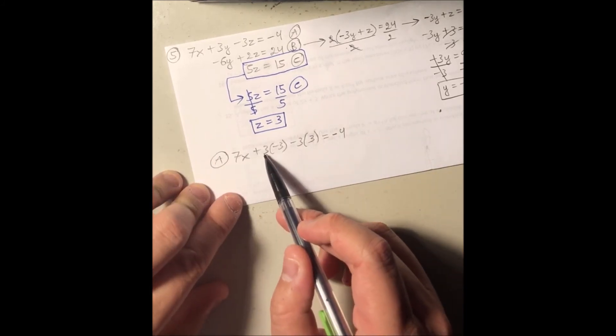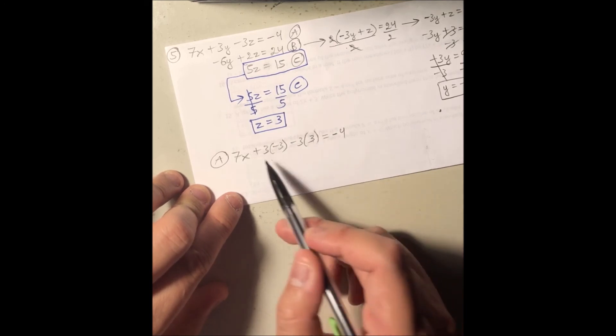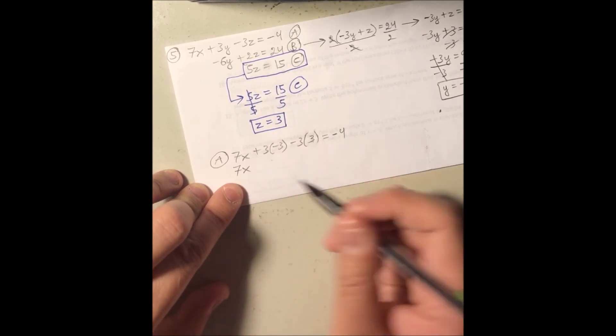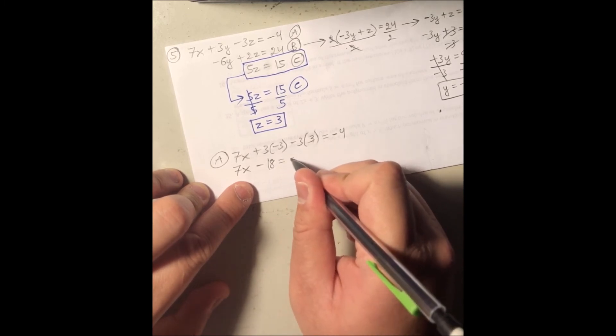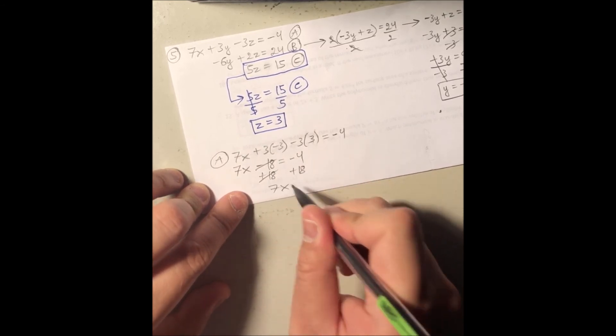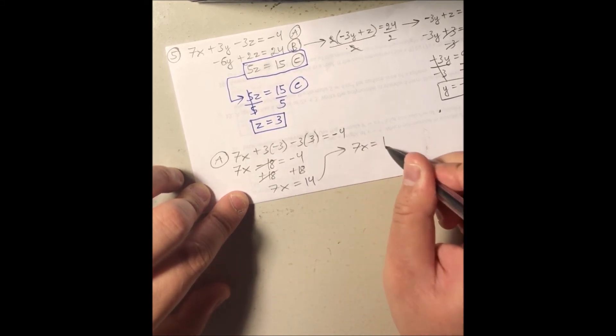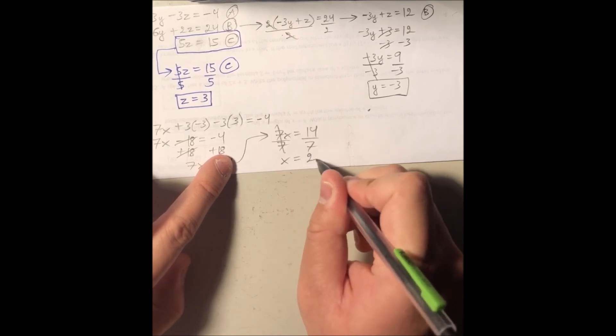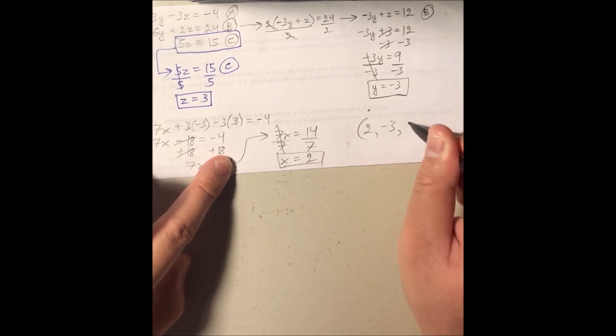Well, let's do some mental math. 3 times negative 3 is negative 9. Negative 3 times 3 is negative 9. Negative 9 plus negative 9 is gonna be negative 18. So I got 7x minus 18 equal to negative 4. Add 18 to both sides. I got 7x equal positive 14. Now divide both sides by 7, so x can be by itself. I got x equal to positive 2. So the solution of this system is 2 comma negative 3 comma 3.